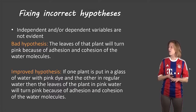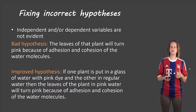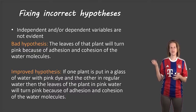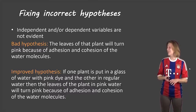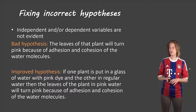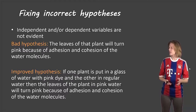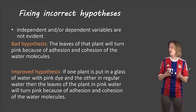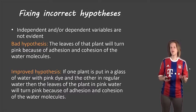Here's one where the independent and dependent variables aren't very clear — in fact, it really just explains the 'because' and misses the whole if-then part. Bad hypothesis: 'The leaves of the plant will turn pink because of adhesion and cohesion of water molecules.' That's not very clear about what you think is going to happen. Better hypothesis: 'If one plant is put in a glass of water with pink dye and the other in regular water, then the leaves of the plant in pink water will turn pink because of adhesion and cohesion of the water molecules.'